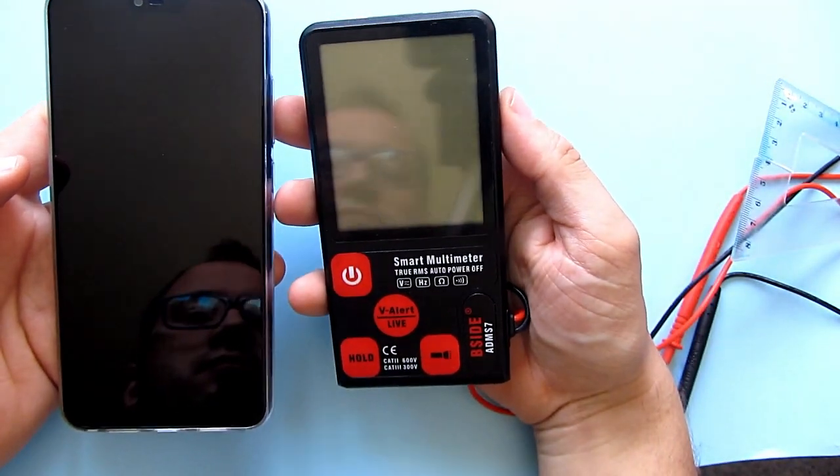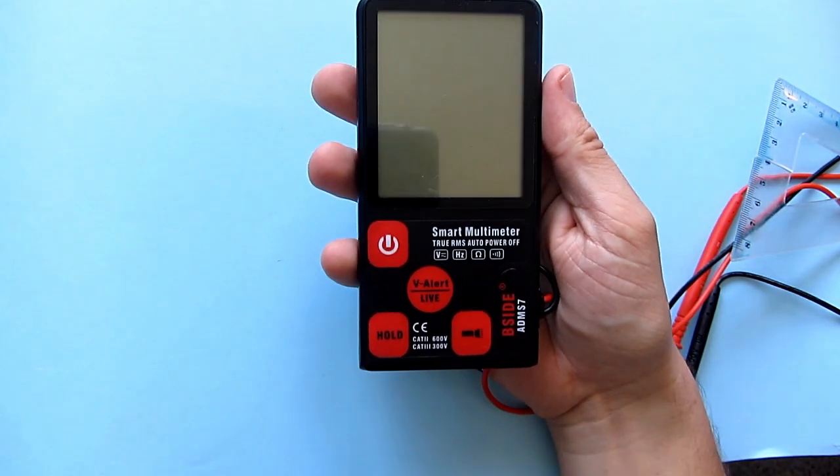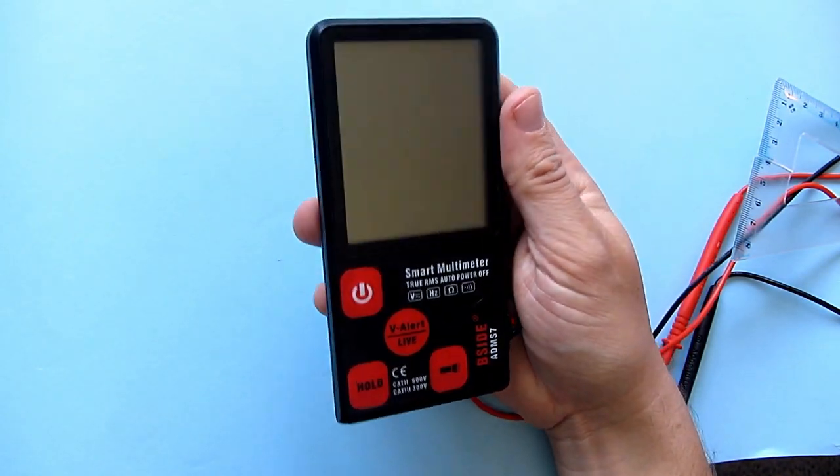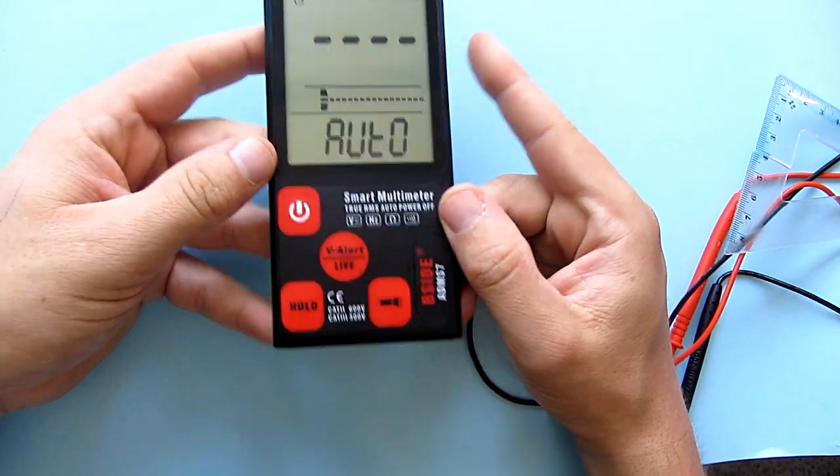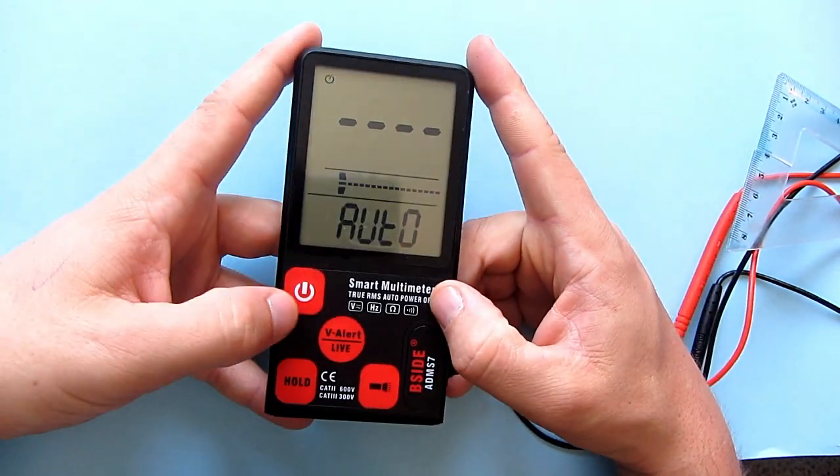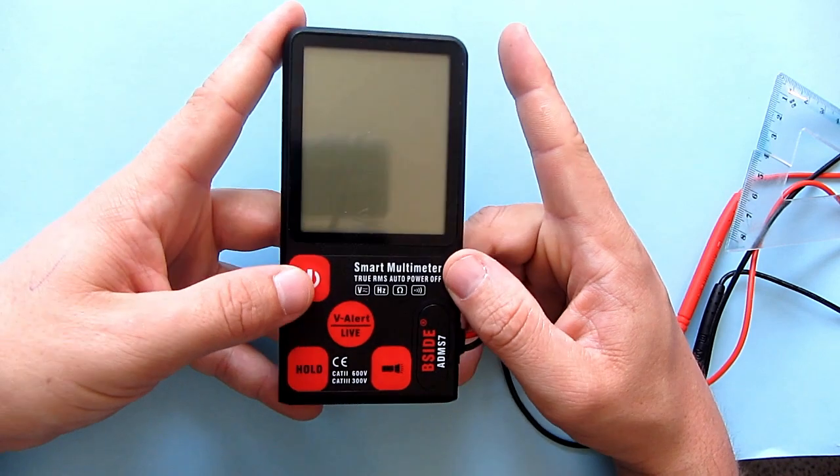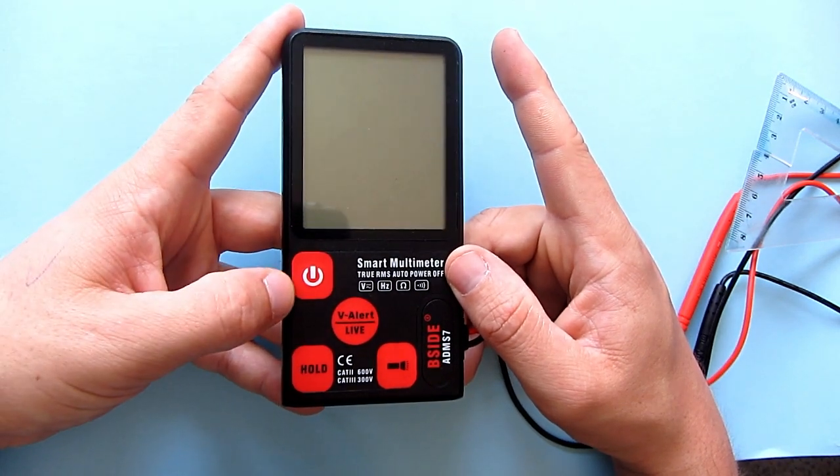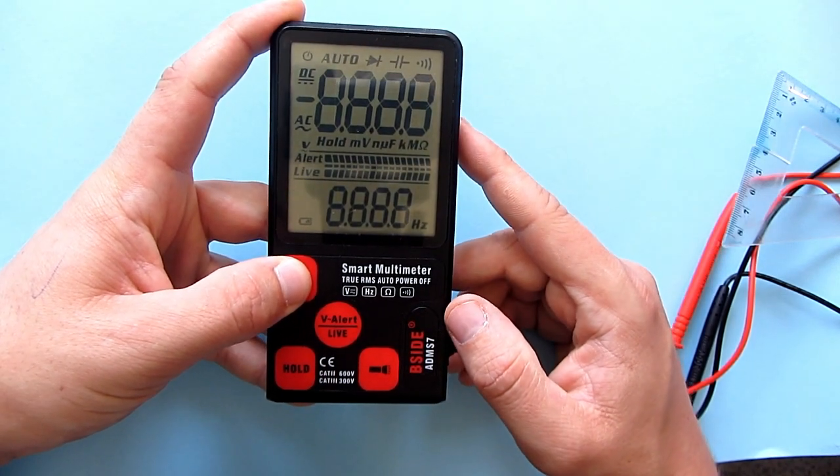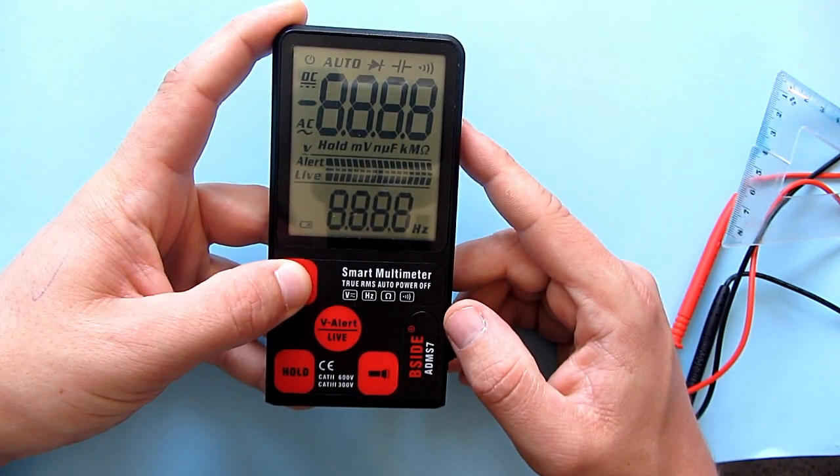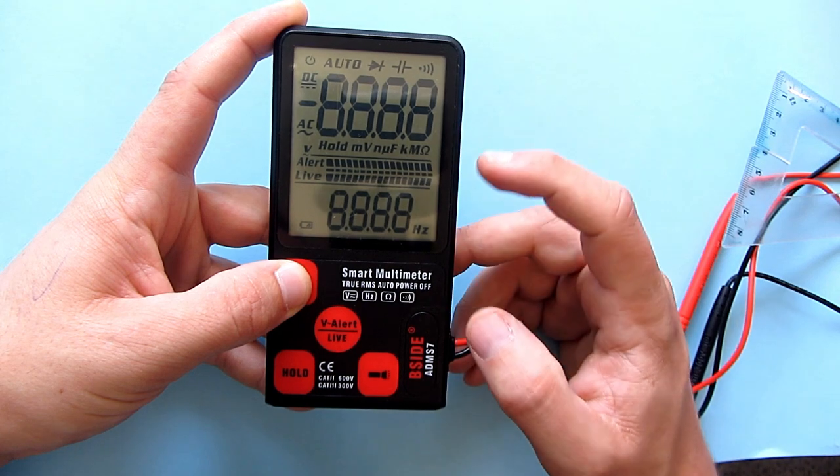It is a little smaller than a modern cell phone. It doesn't have too many buttons. First button is the on and off button. If I press and hold this button, I can see all icons that can be displayed on the screen.